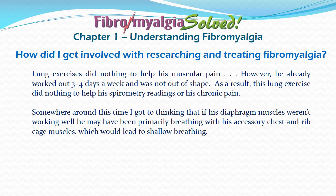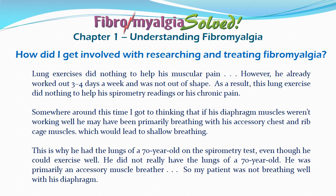Try taking a very deep breath with only your accessory breathing muscles and not use your diaphragm — you will notice that you are greatly inhibited. This turned out to be the case and is why he had the lungs of a seven-year-old on the spirometry test, even though he could exercise well. He really did not have the lungs of a seven-year-old; he is primarily an accessory muscle breather. Later, he would redo the spirometry test with the correct deep diaphragm breathing technique and his test results became correct for his age.